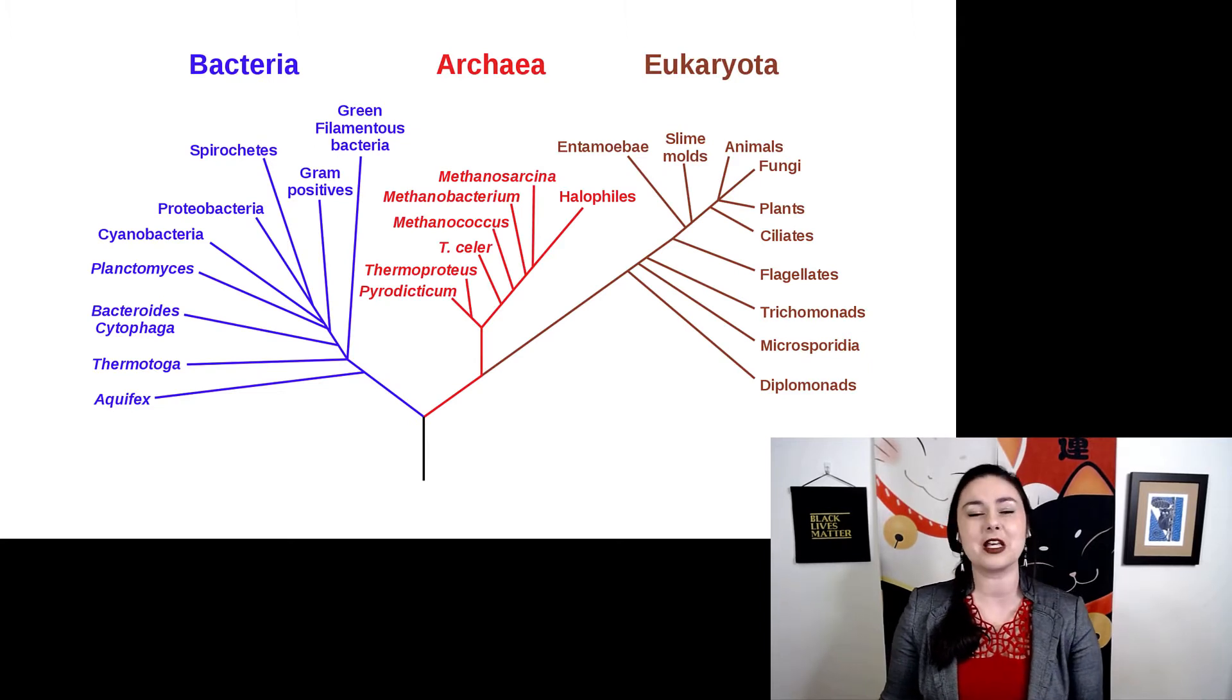It might look something like this. This one's kind of fun because it has all of life in it. We have the three domains, bacteria, archaea, and eukaryota. You might also see that this one is colored in with different branch lengths. It just makes it a little bit easier to interpret, though of course it doesn't always have to be that way.